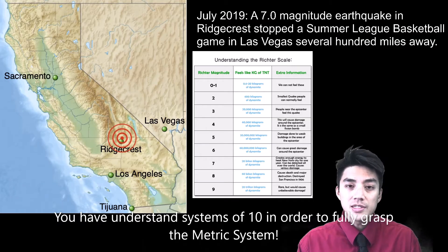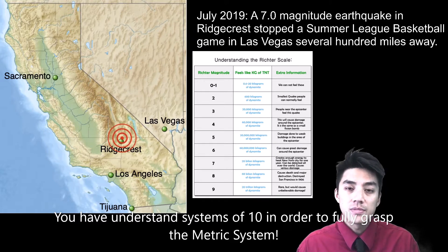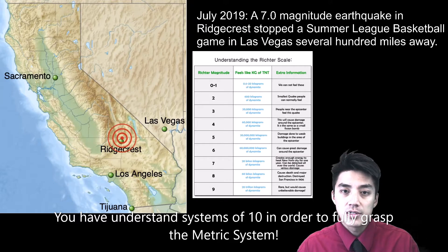In July of 2019, a 7.0 magnitude earthquake that occurred in Ridgecrest, California, stopped a basketball game several hundred miles away in Las Vegas. The arena was shaking, the jumbotron overhead was swaying, and the game was called.